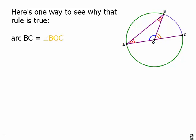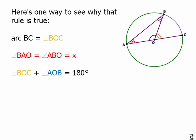The central angle equals the arc — that's easy. So the arc equals that gold central angle. We know that triangle ABO has to be isosceles because it has two radii sides, so those two red angles have to be equal. One of them is the inscribed angle, so we'll call its measure X — that's the thing we're looking for. How does X relate to the size of the arc? If we add the gold and the blue angles that lie along a straight line, they have to add up to 180 degrees.